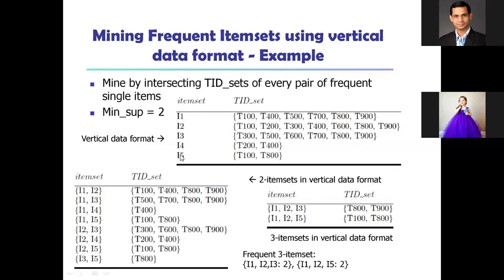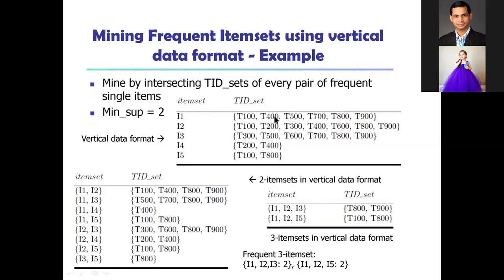For example, item I1 appears in transactions 100, 400, 500, and 700. Item I2 appears in its respective transactions. In the vertical format, you list each item with all the transaction IDs where it occurs.